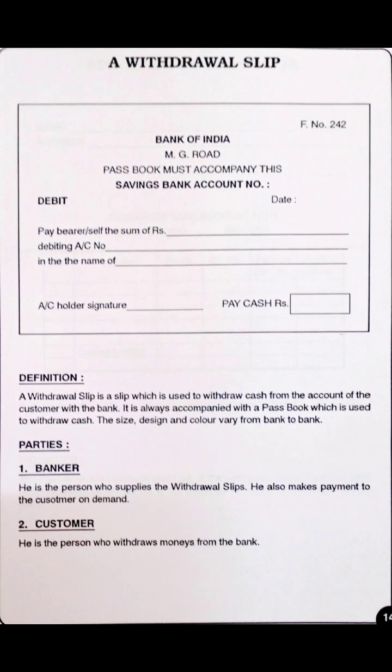Next is the withdrawal slip — very important. Write Bank of India, MG Road, and the address. Then 'passbook must accompany this — saving bank account number.' Debit on the left-hand side, date always on the right-hand side at the top, and write the number. Then: 'pay bearer/self the sum of rupees —, debiting the account number — in the name of —.' The account holder's signature comes on the left-hand side downward. 'Pay cash rupees' appears in the box column below where you write the amount in both words and figures — you must mention this in every cheque type including the withdrawal slip.